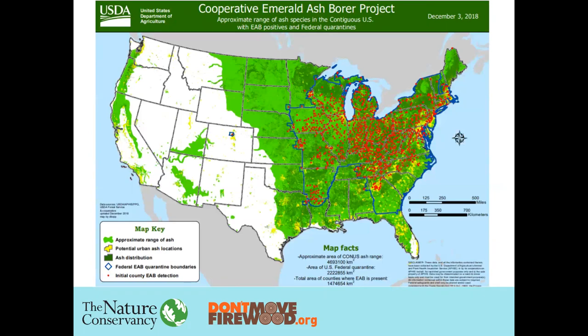Likewise, emerald ash borer is currently a regulated pest. This is a map of the regulated area, which is the blue line somewhat irregular around various states. The red dots are the first location detected in a given county. You can see that the regulated area for emerald ash borer does not tightly conform to the found initial county detection dots. For instance, all of Georgia is under the regulated area; however, only northern Georgia is known to have emerald ash borer. So the regulated area is not necessarily in tight correspondence with the findings.